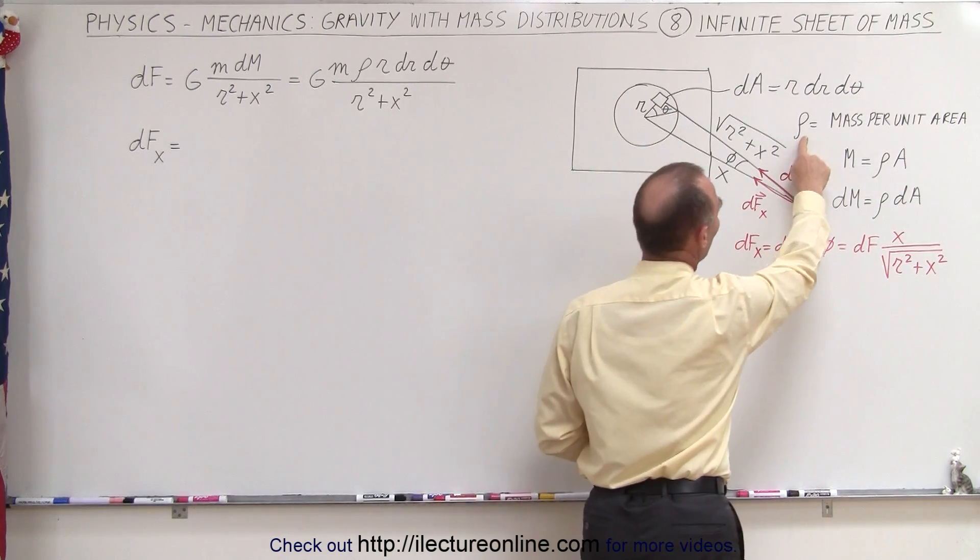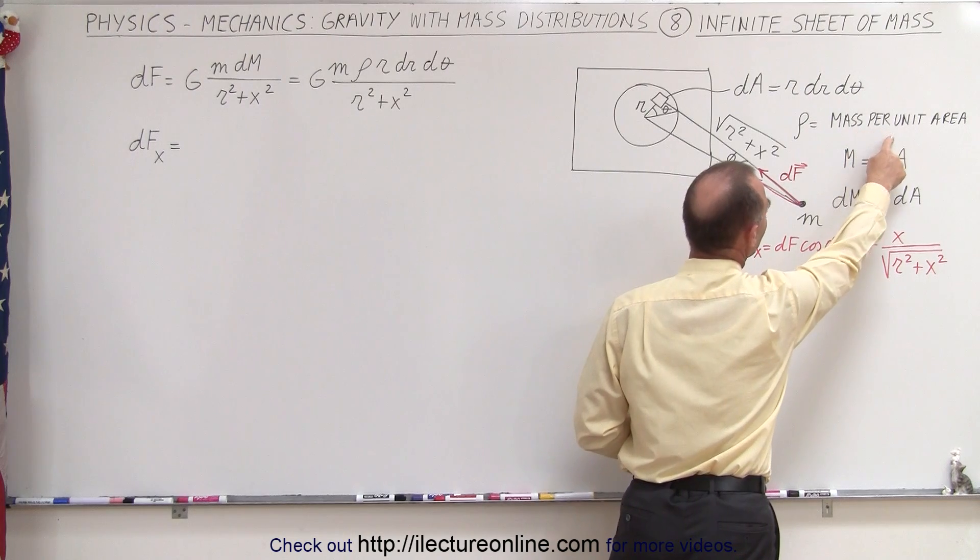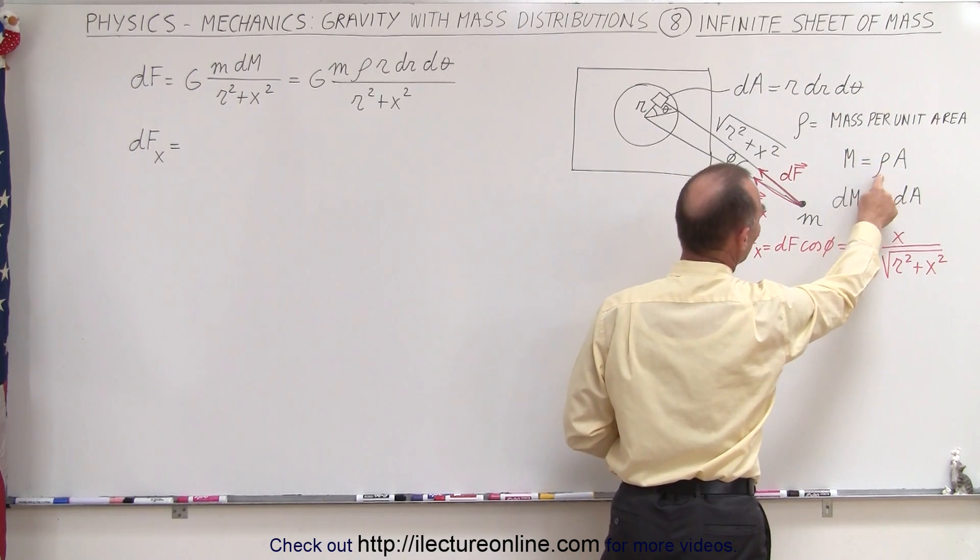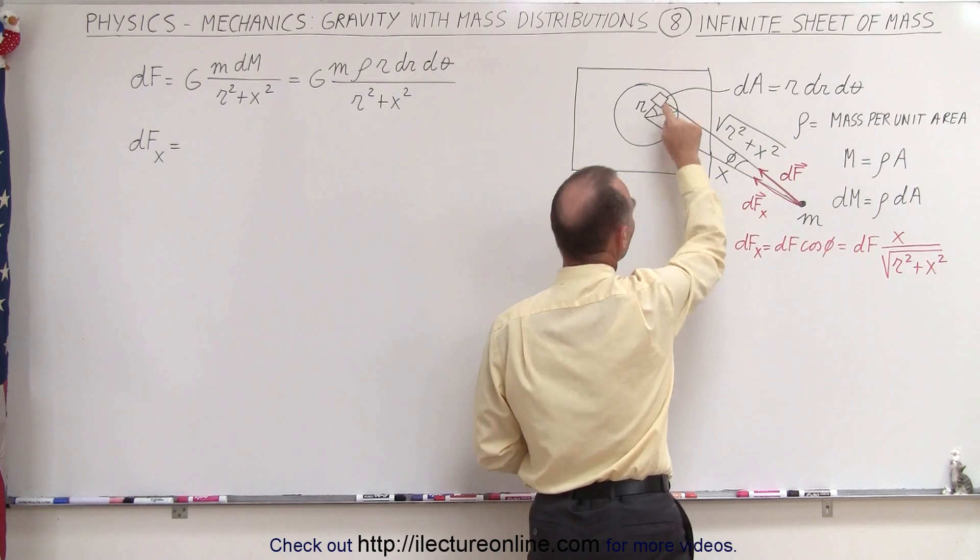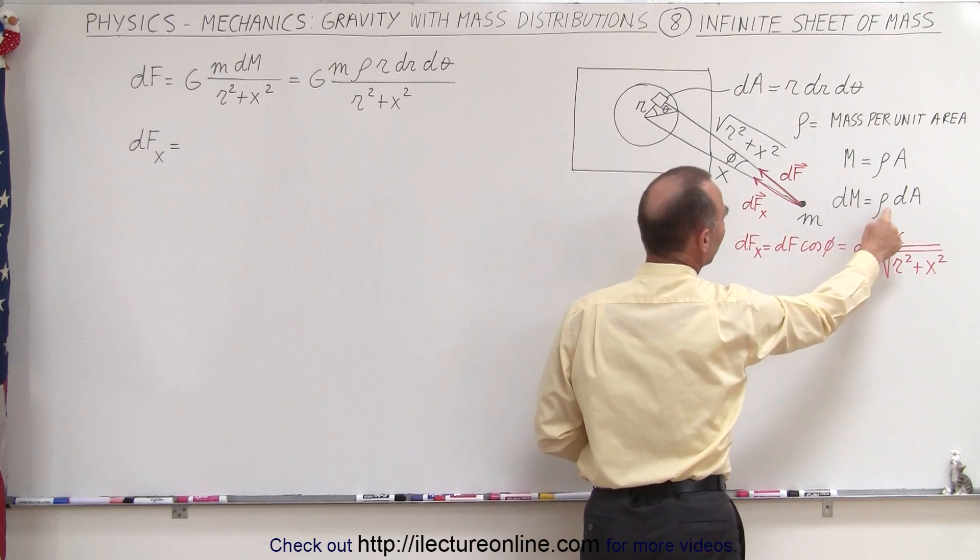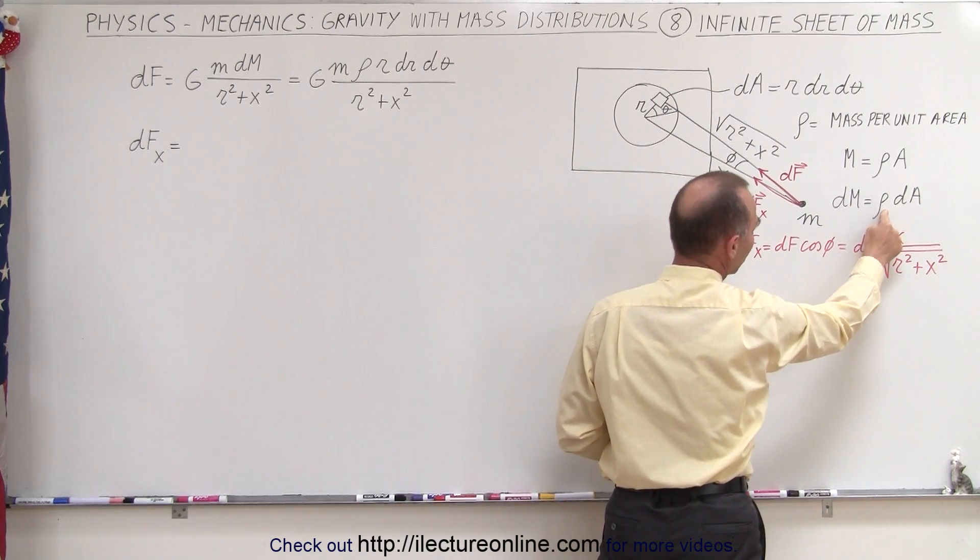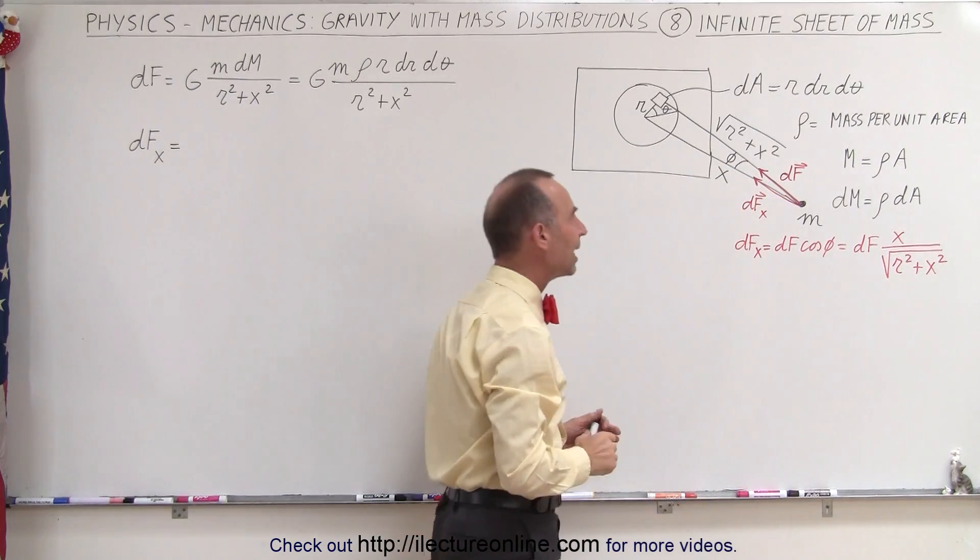Now the rho is called the mass per unit area, so the total mass will be rho times the area, or the small little area element will have dm, which is the mass per unit area, times the small dA.